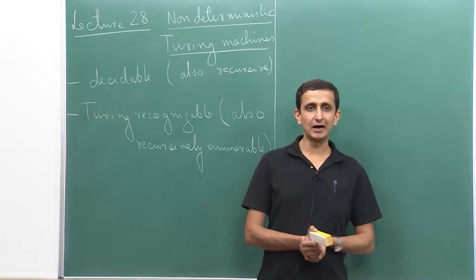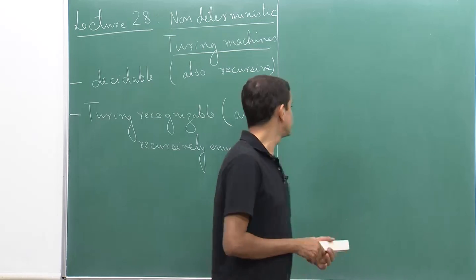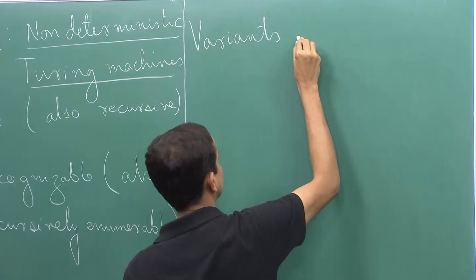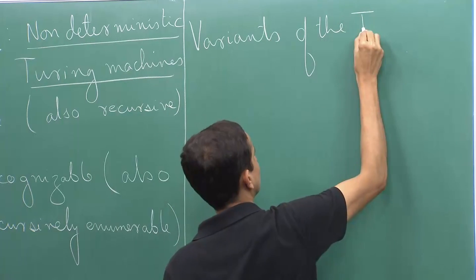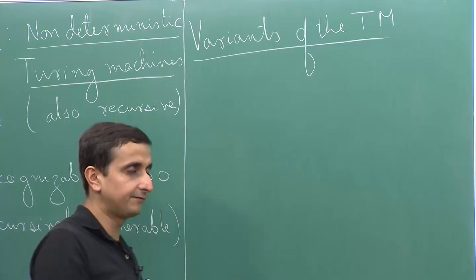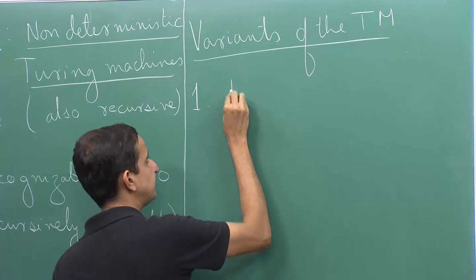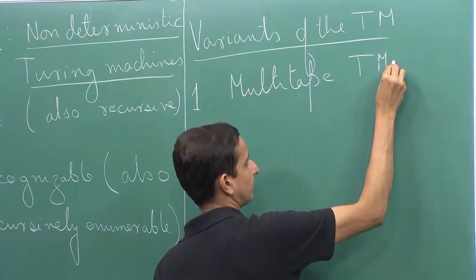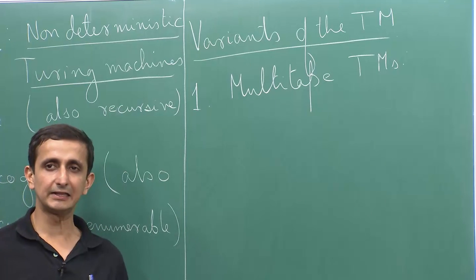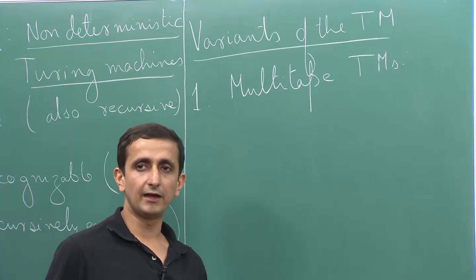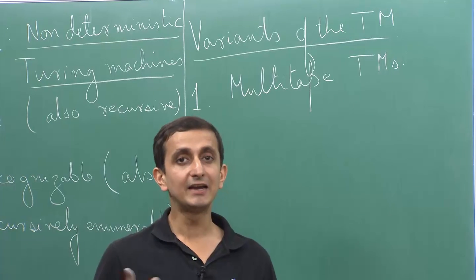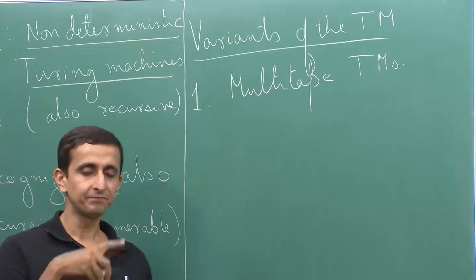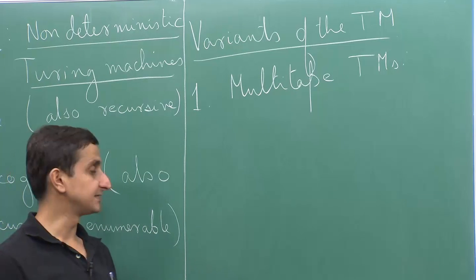What we are going to see today is other variants of Turing machines. The first variant we are going to study is what are known as multi-tape Turing machines. When we define Turing machines, we said it is a computational model with a finite state and one tape. But what if instead of one tape, I have two tapes, three tapes, or some k number of tapes? Is it any more powerful, or is it the same as a standard Turing machine?